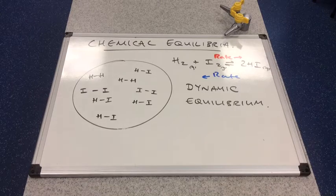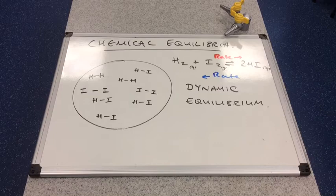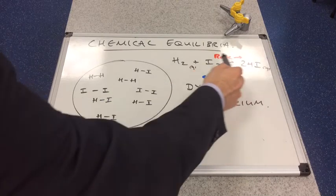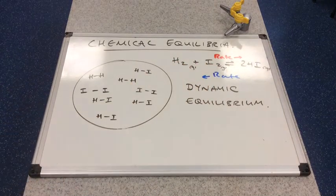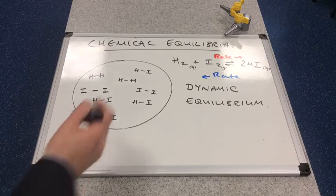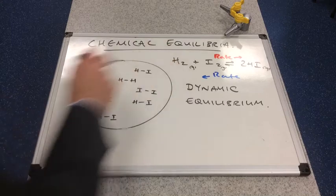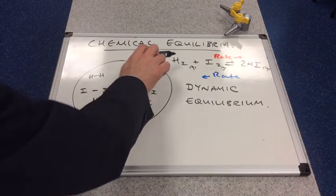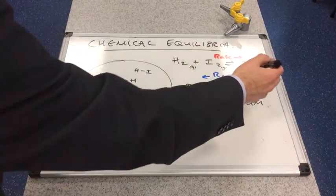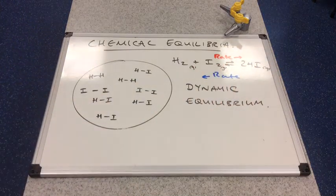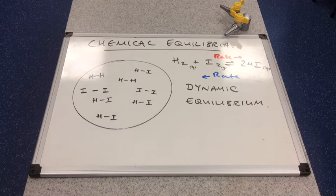Another thing to appreciate at equilibrium is that the concentrations of all of the particles, all of the species in the system, will remain constant. That's because the rate of reaction of H2 and I2 in this example is equal to the rate of decomposition of HI, and so the concentrations of everything will remain constant.